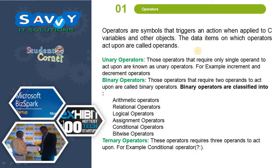Operators are symbols that trigger an action when applied to variables and other objects in Java. The data items on which operators act are called operands. Unary operators are those that require only a single operand to act upon — we can simply say they perform operations on only one operand. For example, increment and decrement operators.